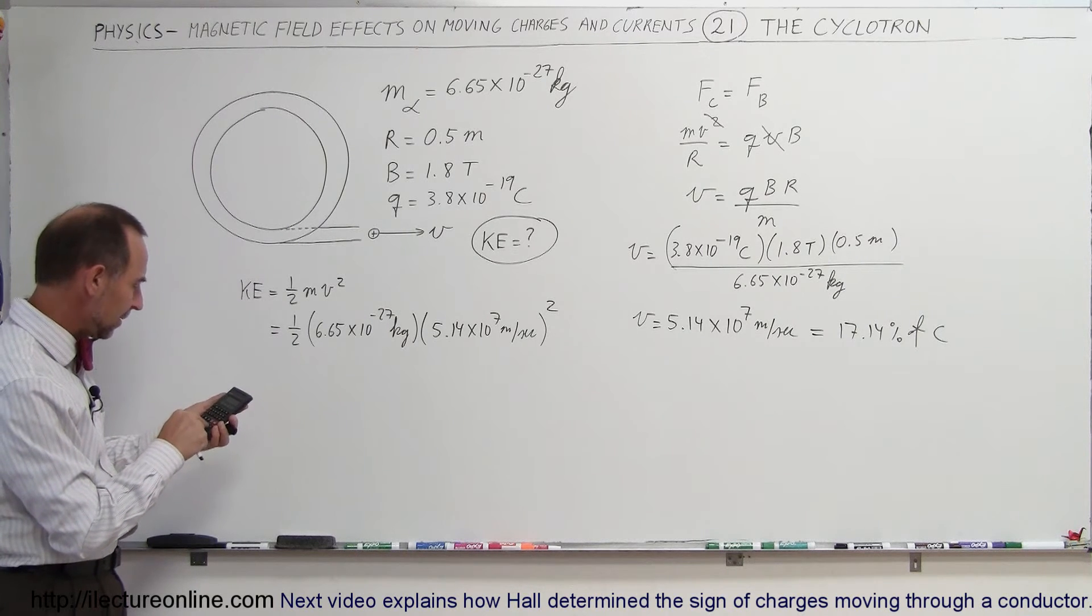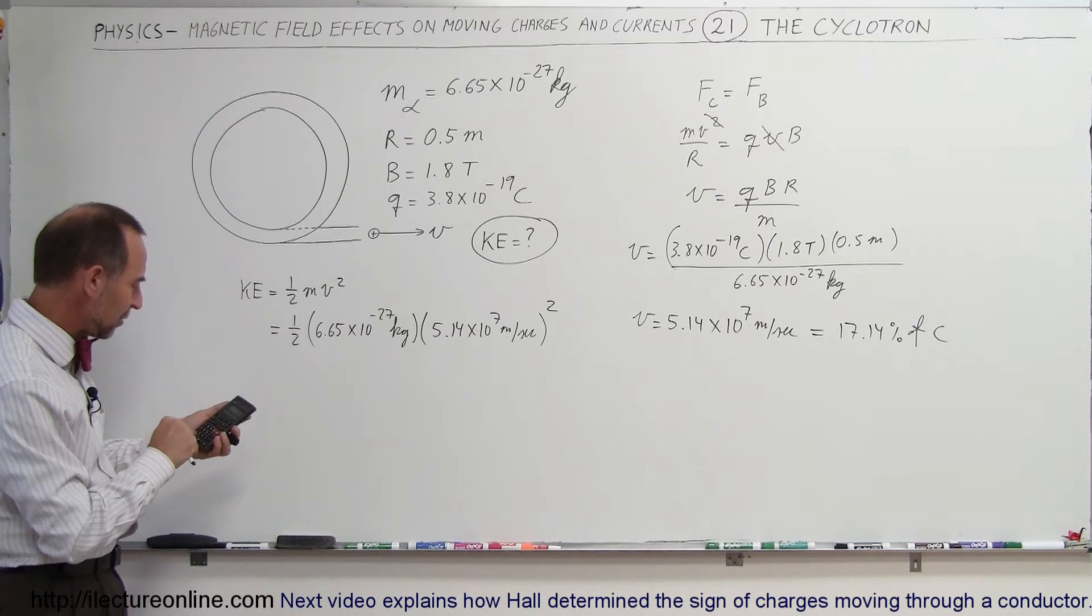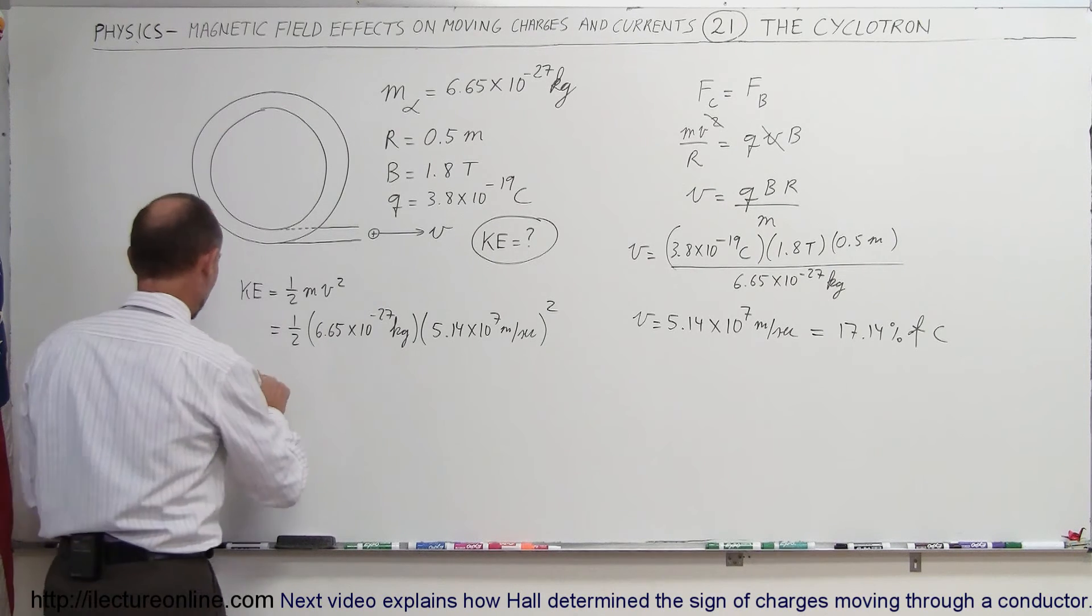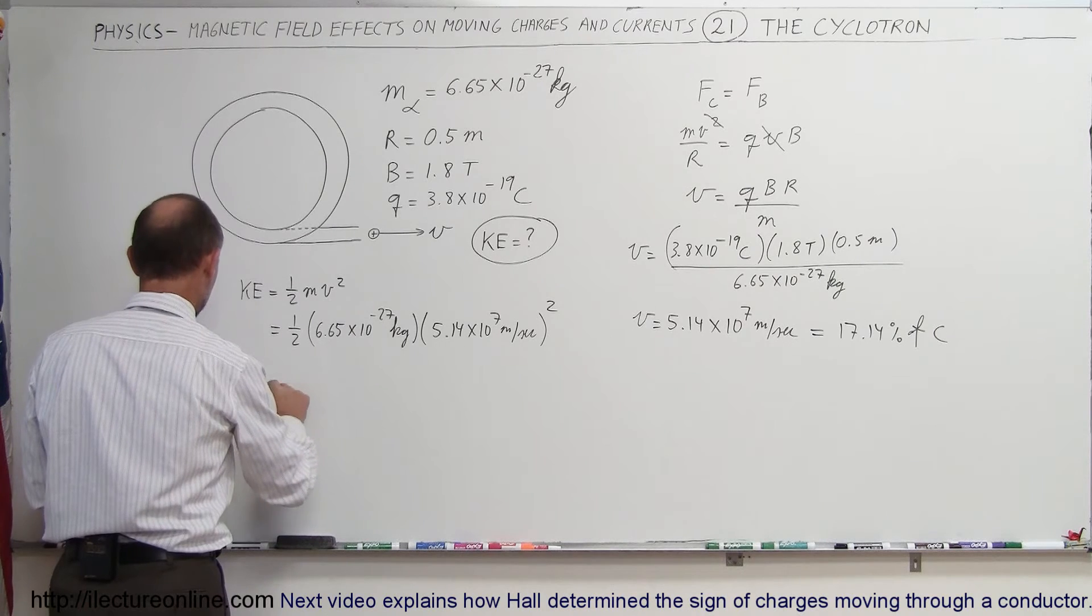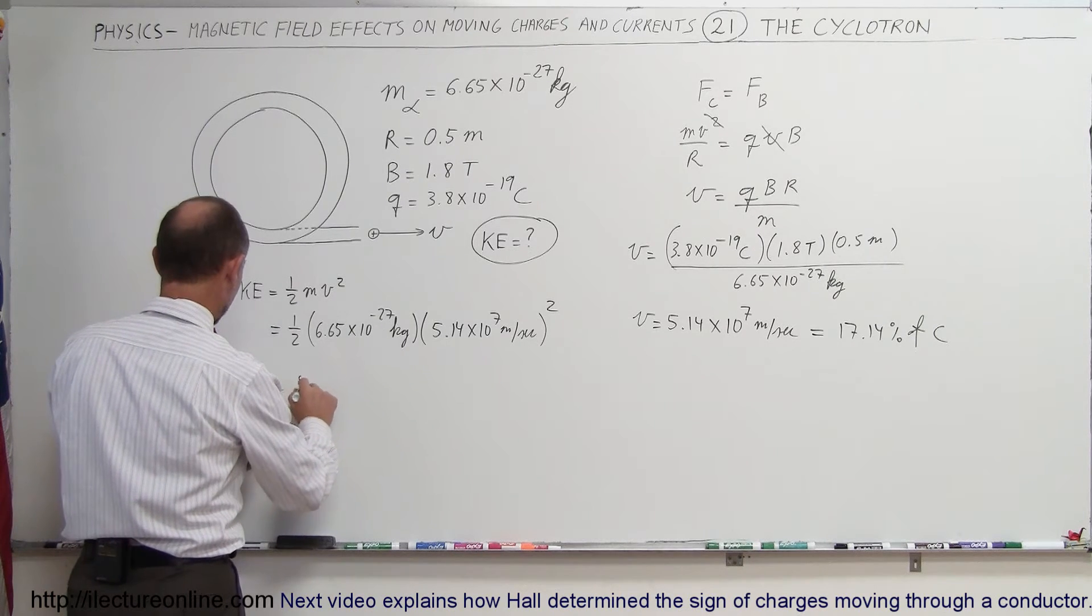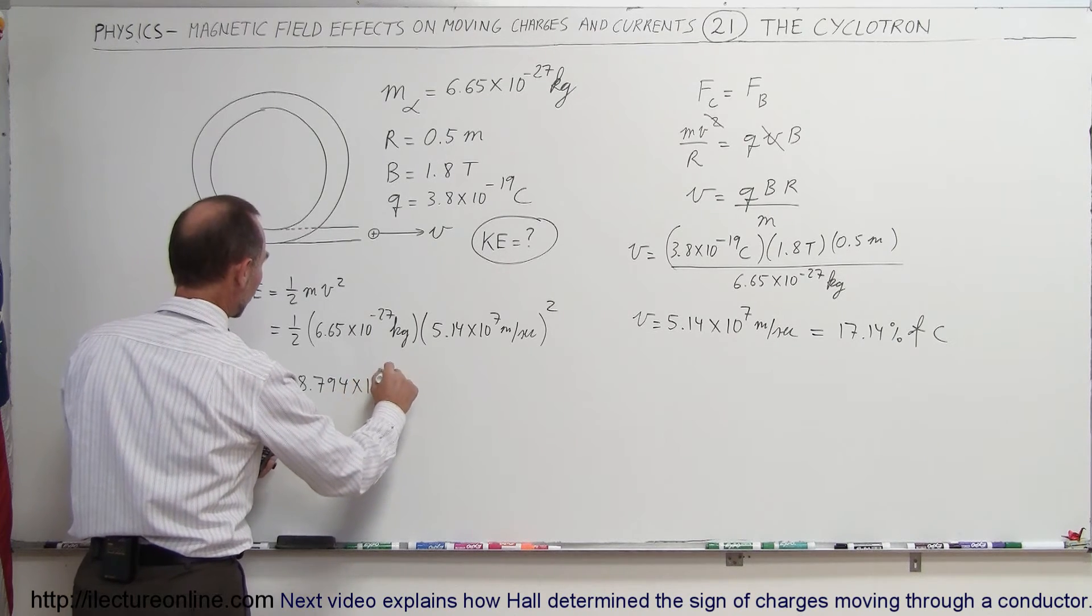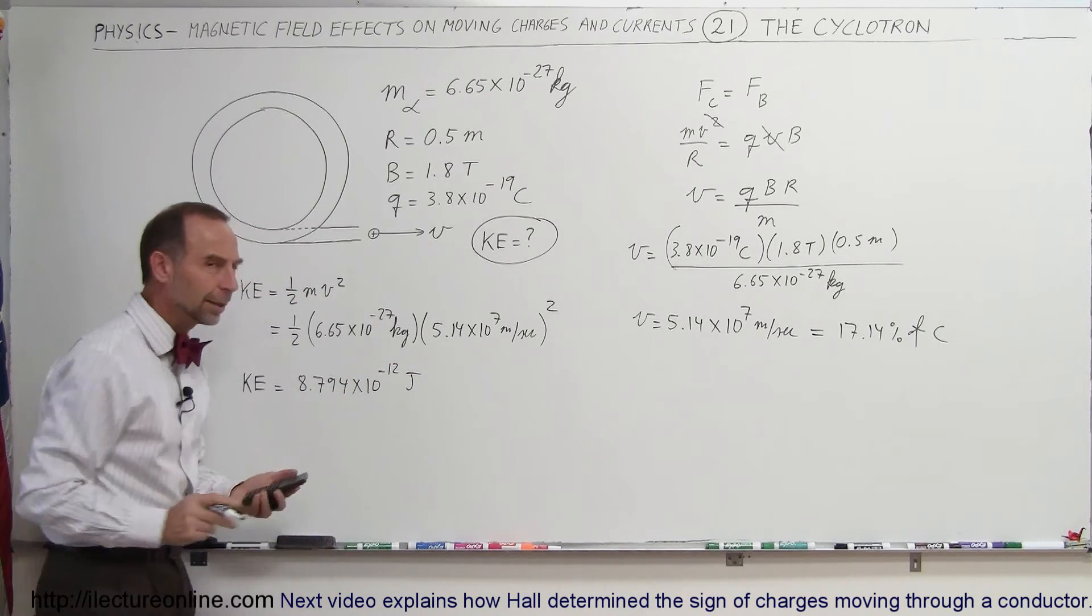Square that amount times 6.65 e to the minus 27 and divide by 2. And so we have a kinetic energy equal to 8.794 times 10 to the minus 12 joules.